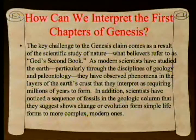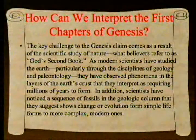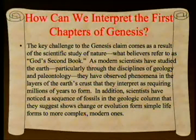The people who challenge the biblical record by and large have trouble with science itself. The key challenge to the Genesis claim comes from the scientific study of nature—what believers refer to as God's second book. As modern scientists have studied the Earth, particularly through geology and paleontology, they've observed phenomena in the layers of the Earth's crust that they interpret as requiring millions of years to form.